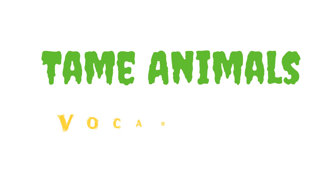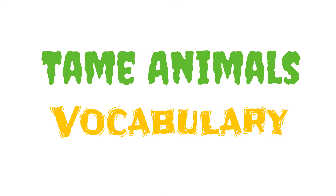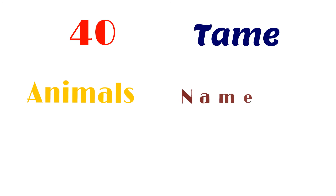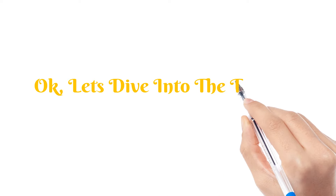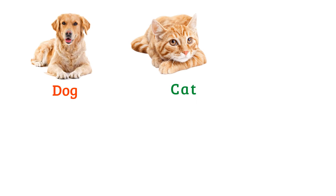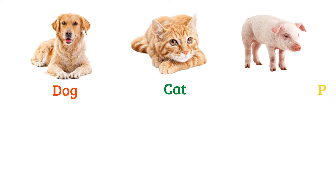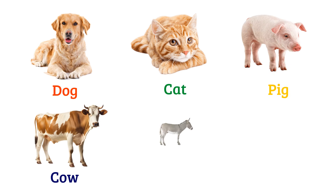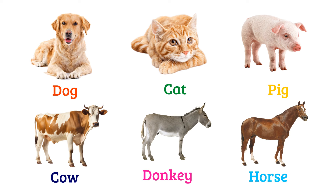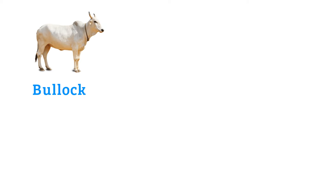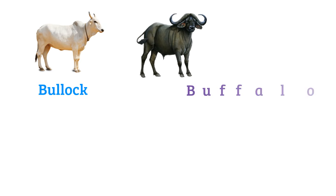10 animals vocabulary — about 40 animal names in English with pictures. Let's dive into the topic. Dog, cat, pig, cow, donkey, horse, bullock, buffalo.